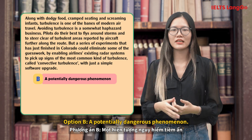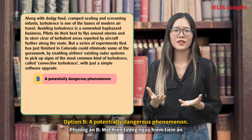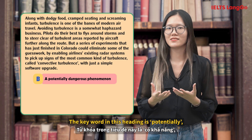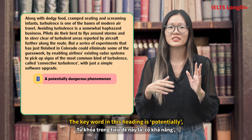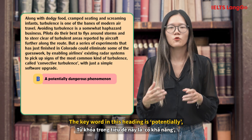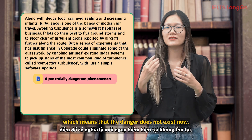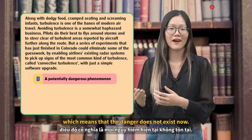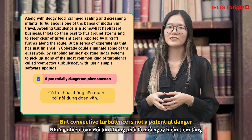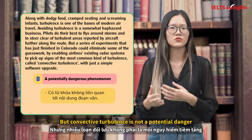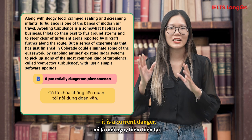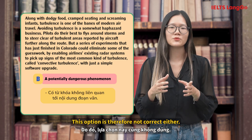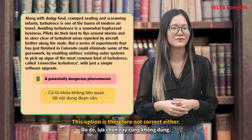Option B: A potentially dangerous phenomenon. The key word in this heading is potentially, which means that the danger does not exist now. But convective turbulence is not a potential danger — it is a current danger. This option is therefore not correct either.